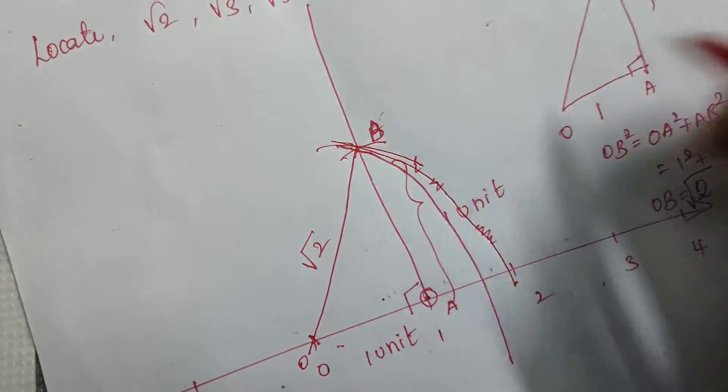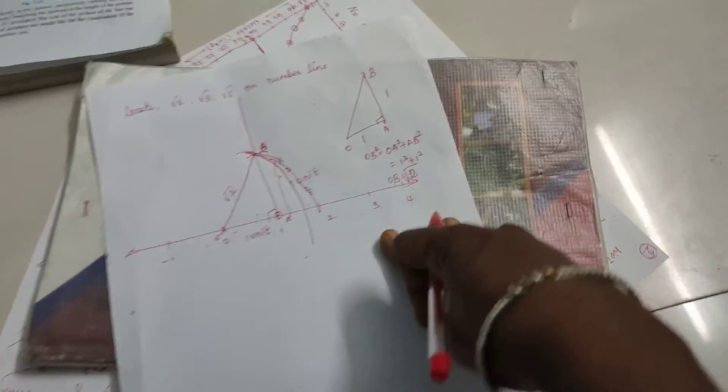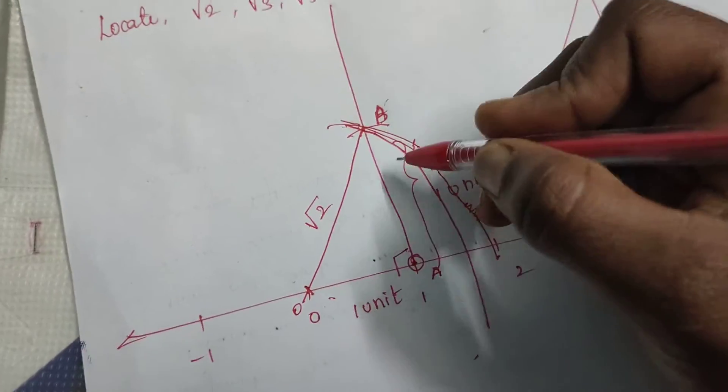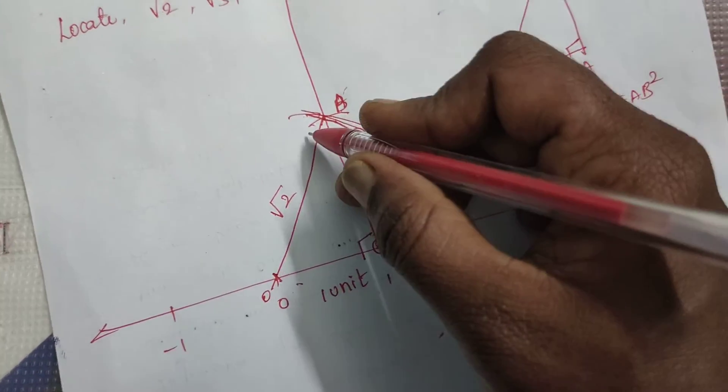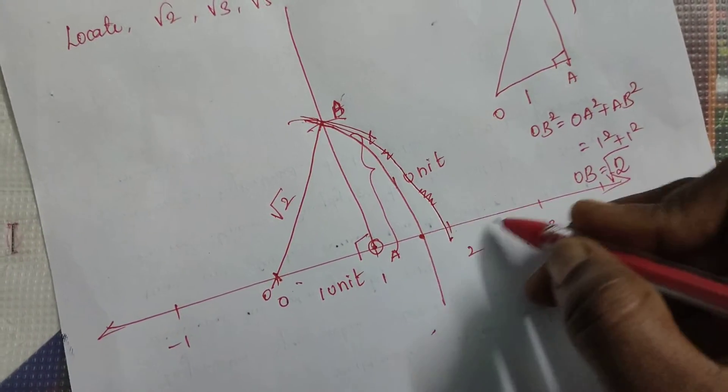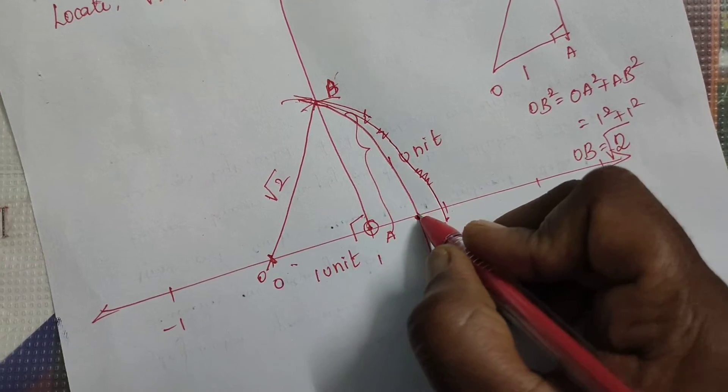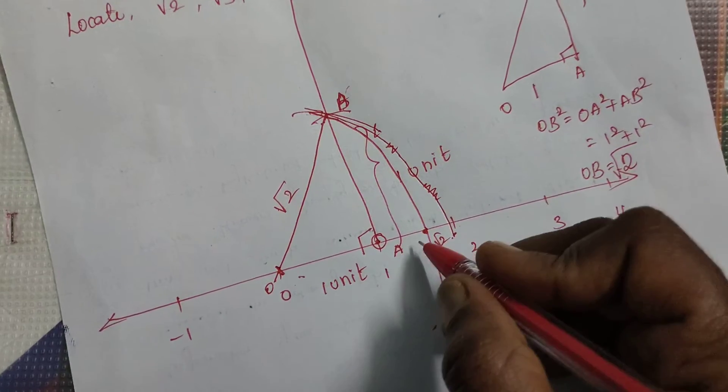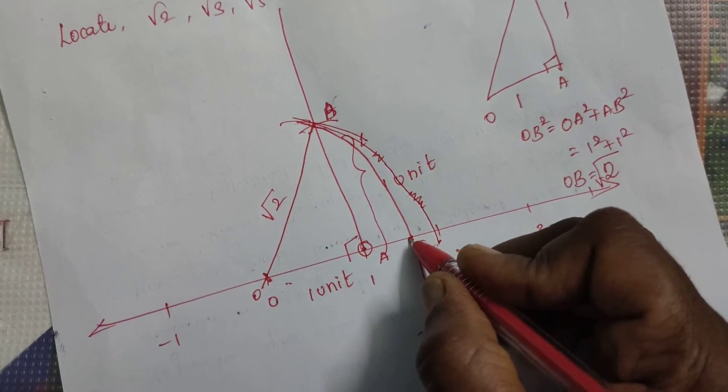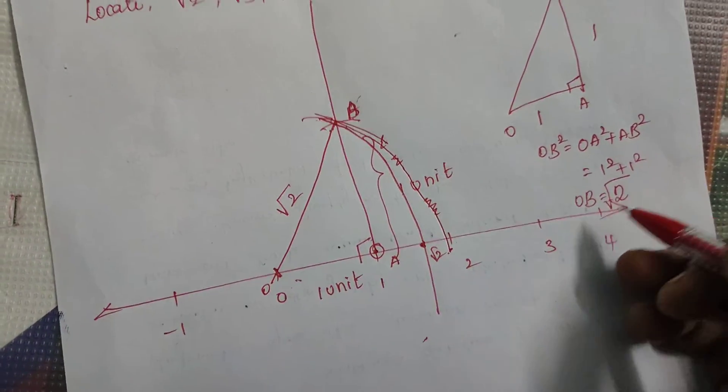This line you don't consider. Somewhere between 1 and 2, not even so long distance. It will be very close to 1 really. So after this point where this curve cuts the number line is root 2. Because this distance also will be root 2. This distance also will be root 2. So you have marked what is the value of root 2 on the number line or where root 2 will lie on the number line.